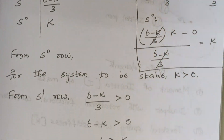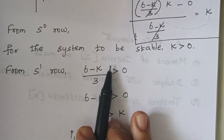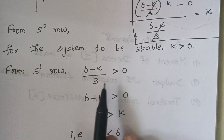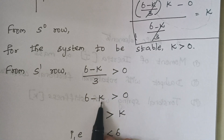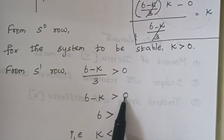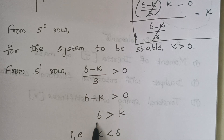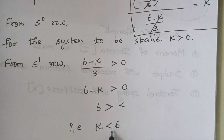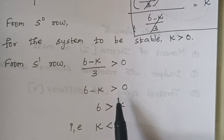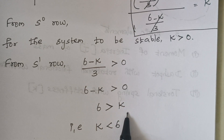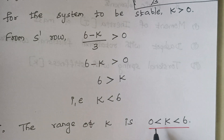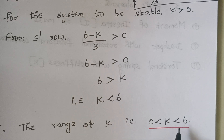Substituting the s¹ condition: (6 − K)/3 > 0. Moving 3 to the right side: 6 − K > 0, which gives 6 > K, meaning K < 6. Combined with K > 0, the range of K for stability is 0 < K < 6. So K can take values such as 1, 2, 3, 4, or 5.